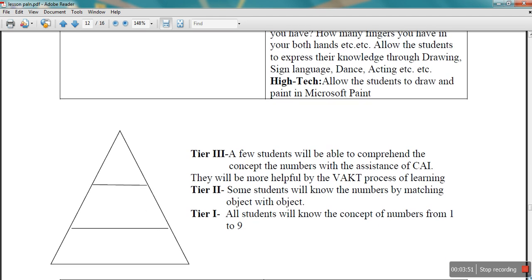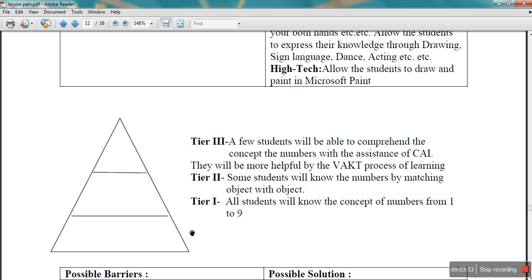Now when you talk of 3-tier instruction, tier 1 all students will know the concept of numbers from 1 to 9. Tier 2, some students will know the numbers by matching objects with objects. So this activity will be done with some children who will match the object to number. Tier 3 instruction is given where few students will be able to comprehend the concept with the help of CAI.